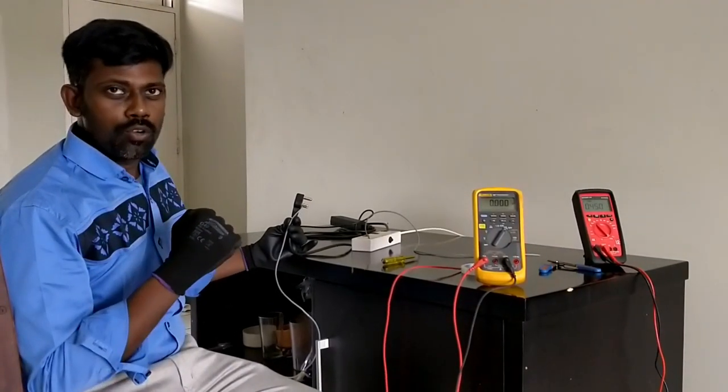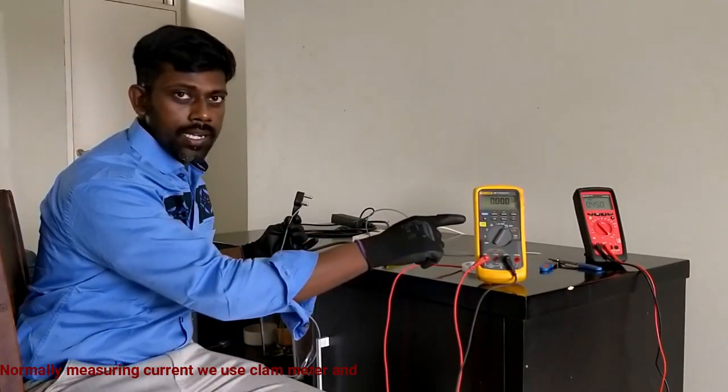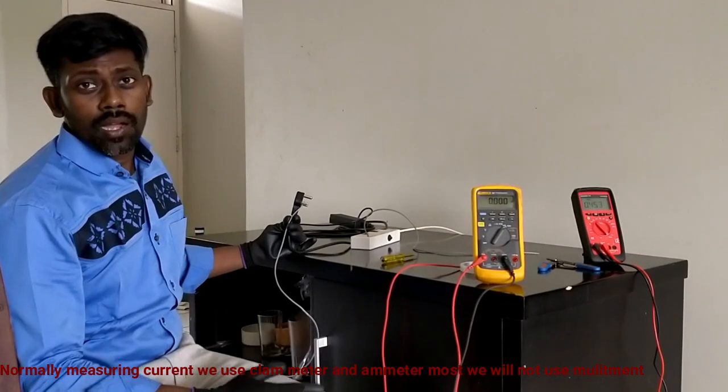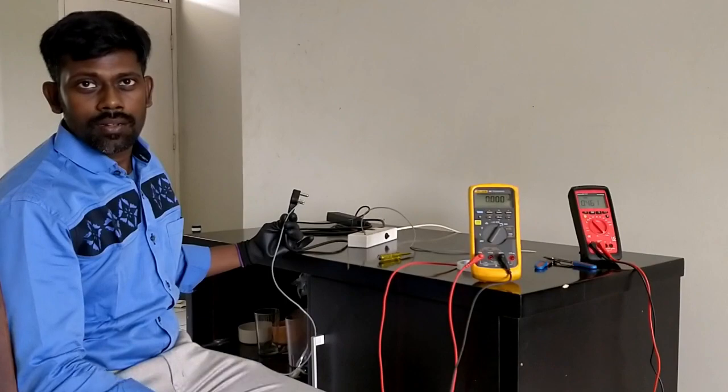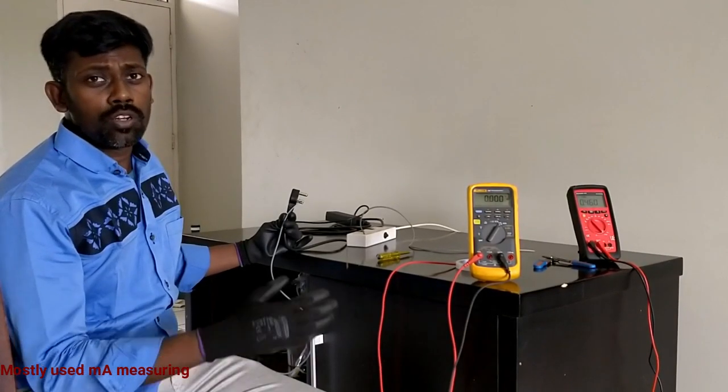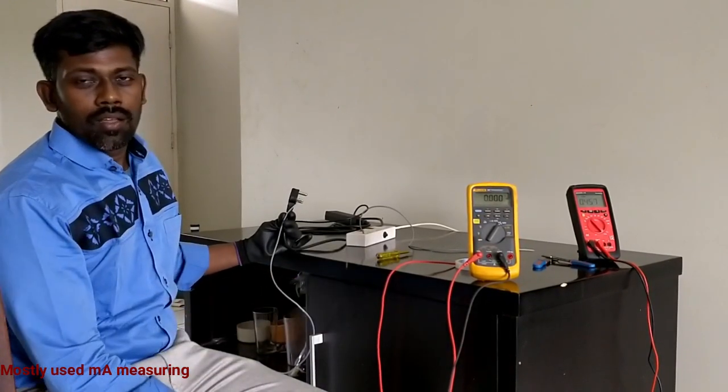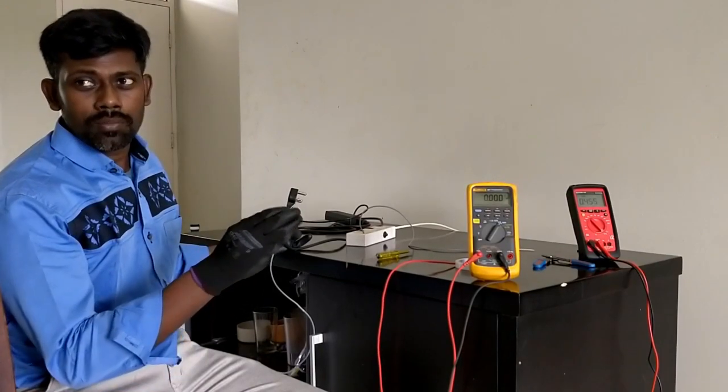Now we are going to see how to measure current in a multimeter. Normally for measuring current we use a clamp meter or ammeter equipment, but mostly we don't use multimeter. We generally use it for milliamps measuring.